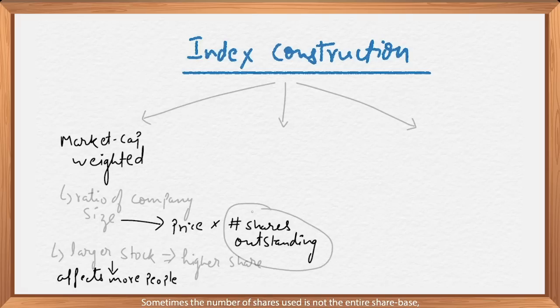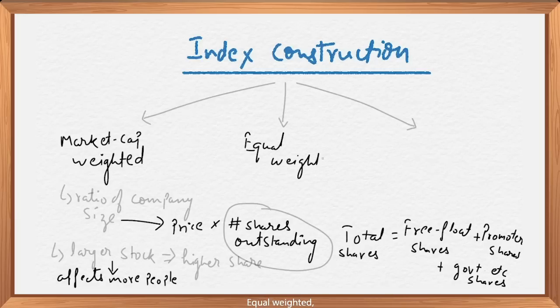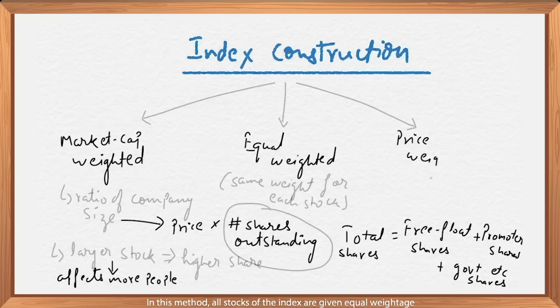Sometimes, the number of shares used is not the entire share base, but free float shares. Meaning, the number of shares available to general public for trading. Example, a promoter of the company will hold their shares with them and that will not be counted in free float shares. Second, equal weighted. In this method, all stocks of the index are given equal weightage.